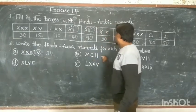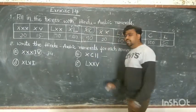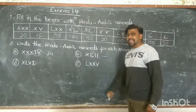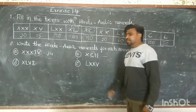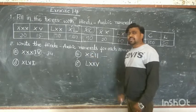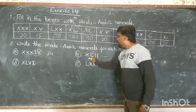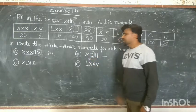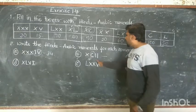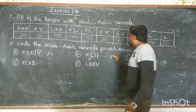Next, second one: C means 100, X before C means subtract 10 — so XC is 90. That means it is 90.